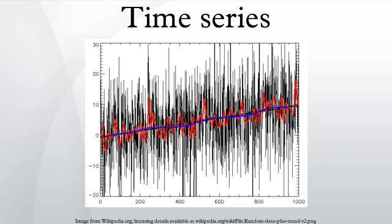Exploratory analysis: The clearest way to examine a regular time series manually is with a line chart such as the one shown for tuberculosis in the United States, made with a spreadsheet program. The number of cases was standardized to a rate per 100,000 and the percent change per year in this rate was calculated.